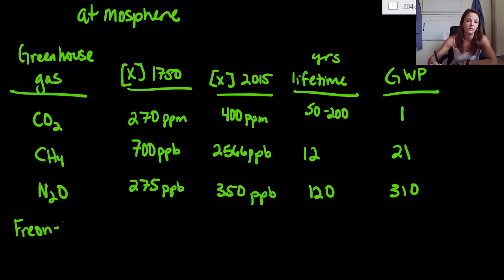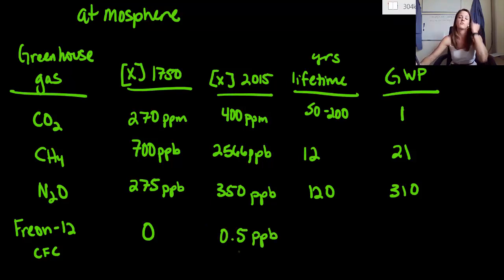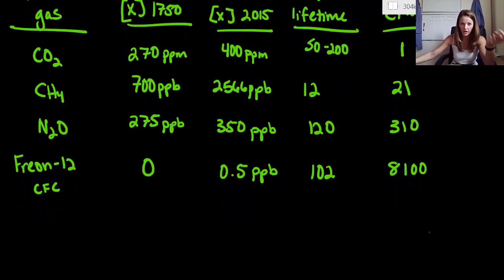Now our worst offender is actually Freon-12, which is a chlorofluorocarbon. This had a concentration of zero in the year 1750 because we as humans created this, so it did not exist then. Now it has right about 0.5 ppb. For the lifetime, it lasts 102 years in our atmosphere, so it has a global warming potential of 8,100. Freon-12 is nasty. It's a bad greenhouse gas. Not only does it destroy our ozone, it also affects us in terms of global warming.